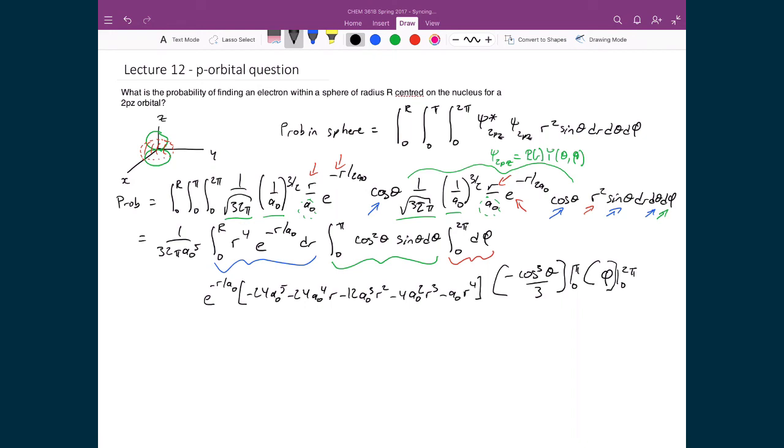And of course out front, I'm going to still maintain this 1 over 32π a₀⁵. The final thing I've forgotten to write down here is the bounds of my integration, which is between 0 and r.